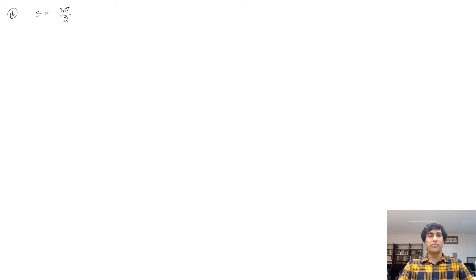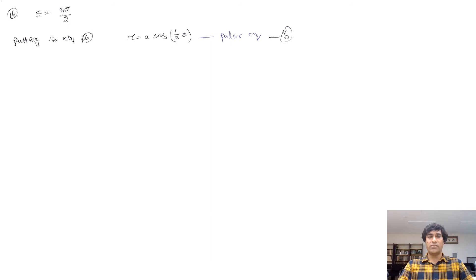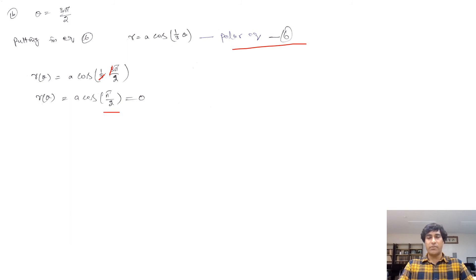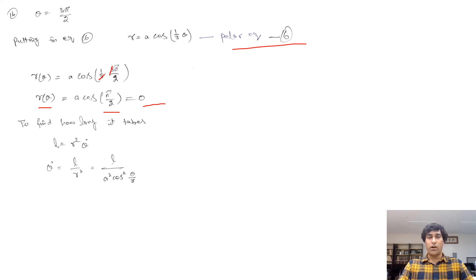Now we move to Part B. The angle given is θ = 3π/2. Putting this into equation 6: cos(3π/2 ÷ 3) = cos(π/2) = cos(90°) = 0, so R = 0 when θ = 3π/2. To find how long it takes, we use angular momentum: l = R²·θ̇, so θ̇ = l/R². Since R² = A²·cos²(θ/3), we have this expression for θ̇.